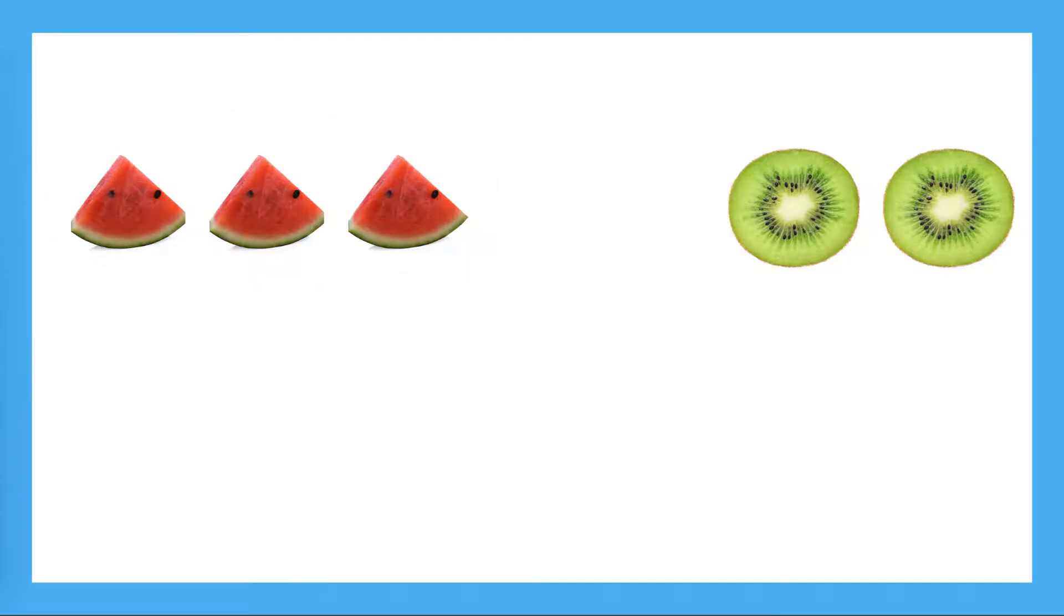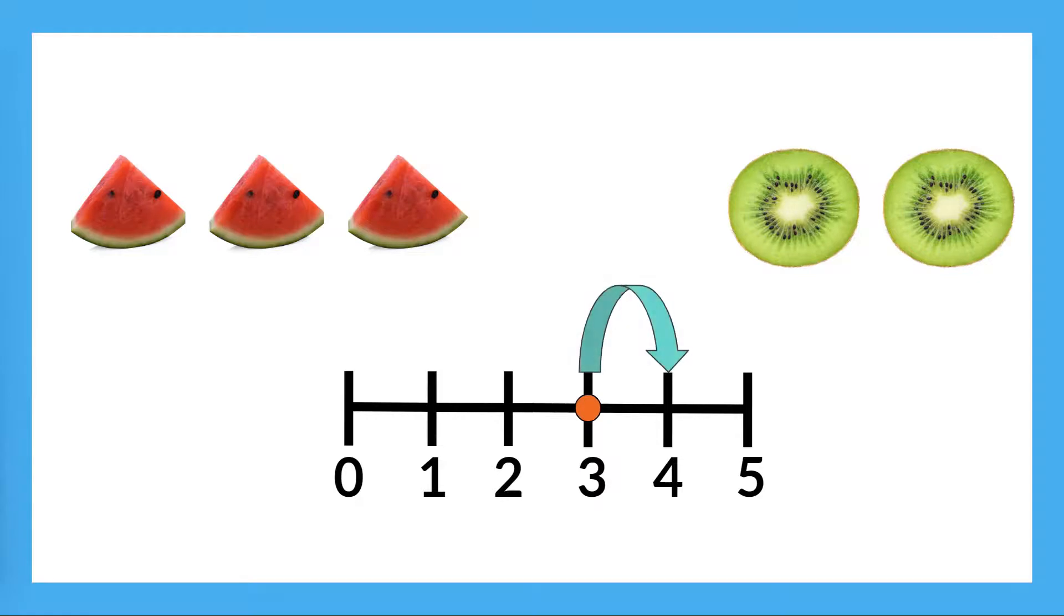Let's use a number line to help us count. Since we're starting with a part three, we'll start counting from three as well. We're adding three plus two, so we'll count on two more. One, two. What number did we land on? Five.